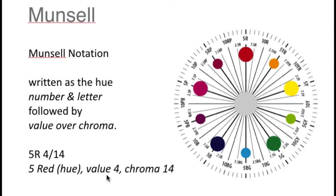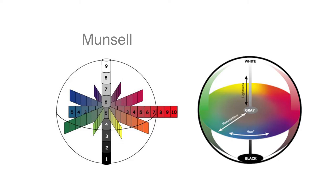And then it's followed by value over chroma. So if we're looking at this notation, we're looking at the number 5 red, which is the hue, value number 4, and that is its vertical distance. And then its chroma is the distance from the core of the hue circle.